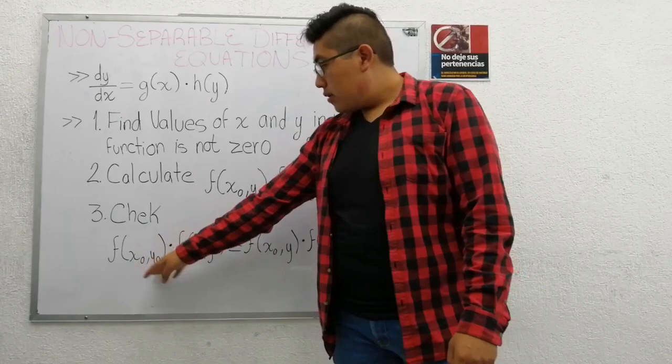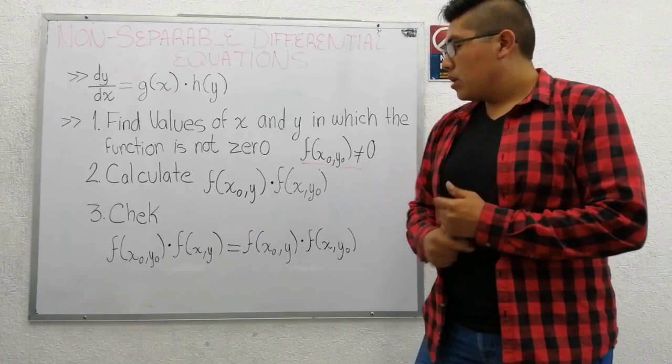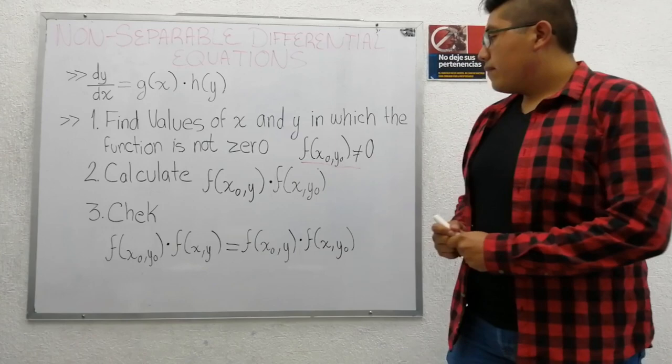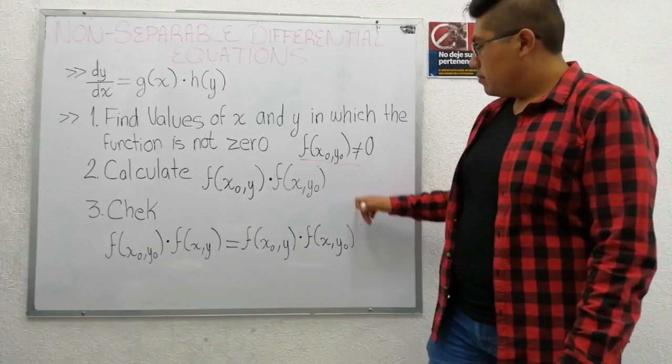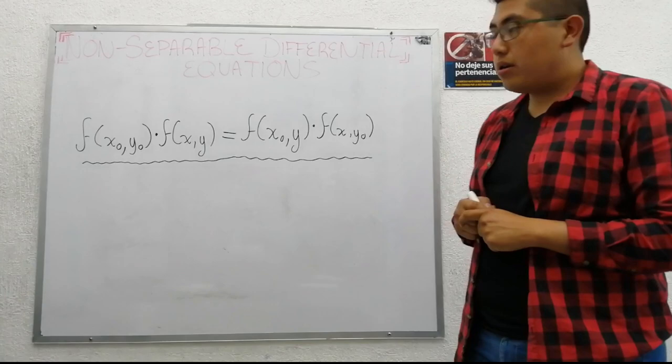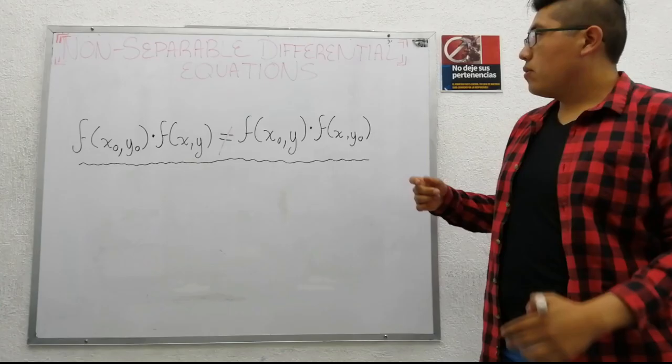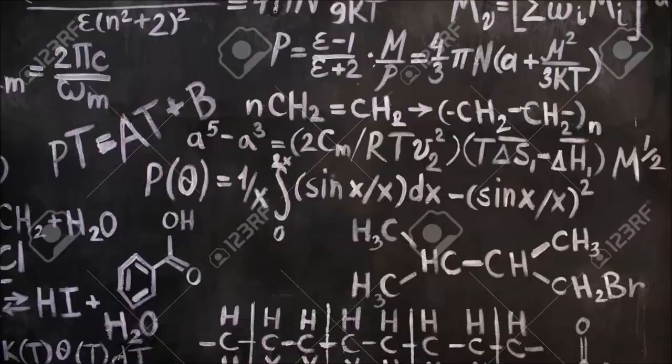Number three, check that the function depending on x sub zero and y sub zero times the original function equals the functions calculated in step number two. When a differential equation cannot be written in this way, we say that we have a non-separable differential equation.